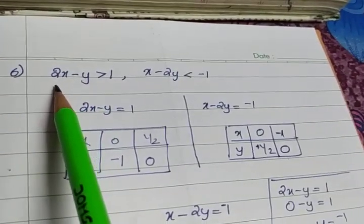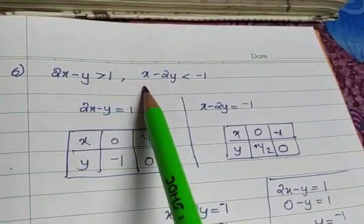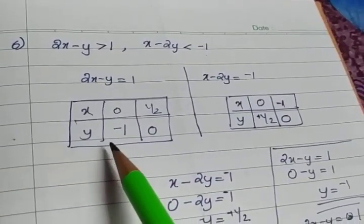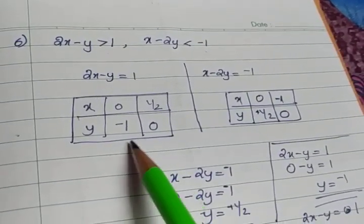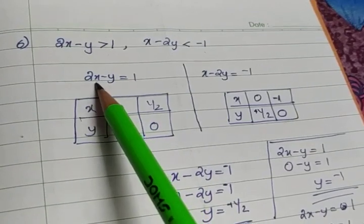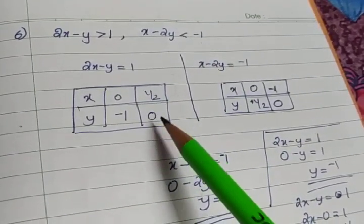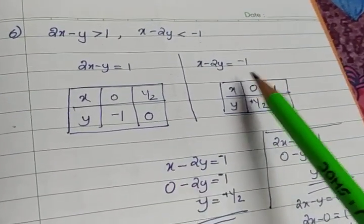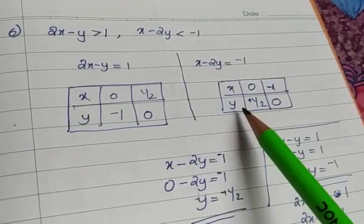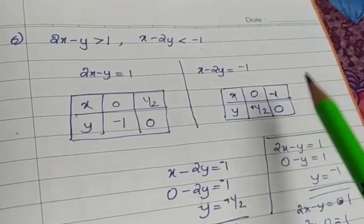The next system of equations is given as 2x minus y greater than 1 and x minus 2y less than minus 1. I have found the two points for each equation: for 2x minus y, the corresponding points are (0, -1) and (1/2, 0), and for x minus 2y equal to minus 1, I got the points (0, 1/2) and (-1, 0).